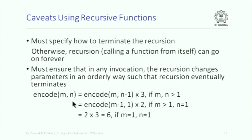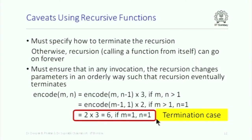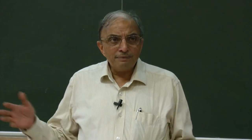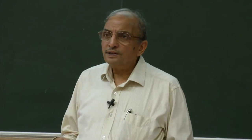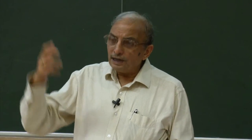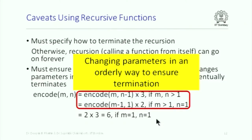Look at encode(m, n): it encodes m, n minus 1 into 3 if both are greater than 1; encodes m minus 1, 1 into 2 if m is greater than 1 but n is 1; and returns 2 times 3 equals 6 if m equals 1 and n equals 1 — this is the termination case. The innermost invocation reduces values to 1 and 1. Notice that the parameters are changed in an orderly way to ensure termination.